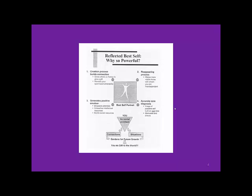Number two is the reappearing process, which makes more visible those to whom you are interdependent. You'll see, as you create the list of ten to twenty people that you want to give you feedback on your Reflected Best Self, that these are the people that are really meaningful in terms of your relationships. Number three is generating positive emotion, which is tied to higher levels of motivation. It broadens your attention, builds social resources, and unleashes intellectual resources.